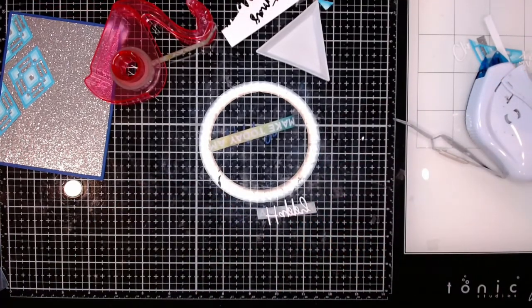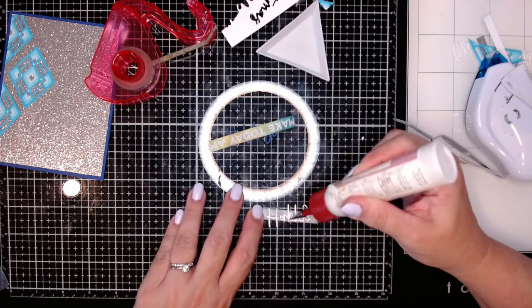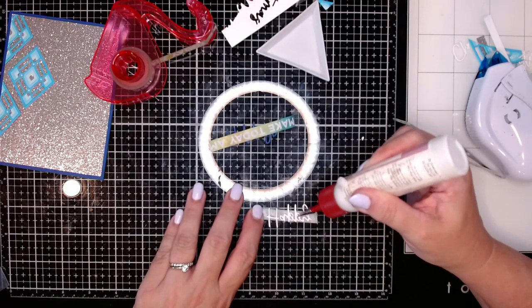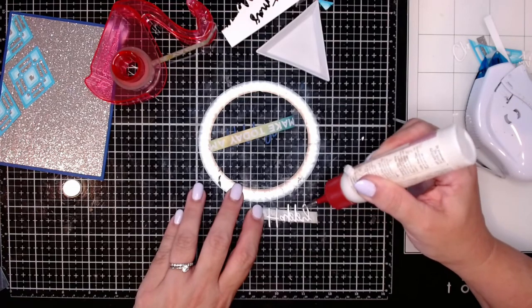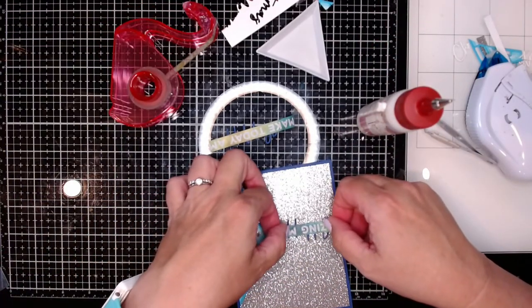Next, I'm going to put some art glitter glue using that fine tip nozzle on the back of these very thin little lines for the Happy Holidays sentiment that I'm going to be adding to my card. And then let's see if my little idea actually works.